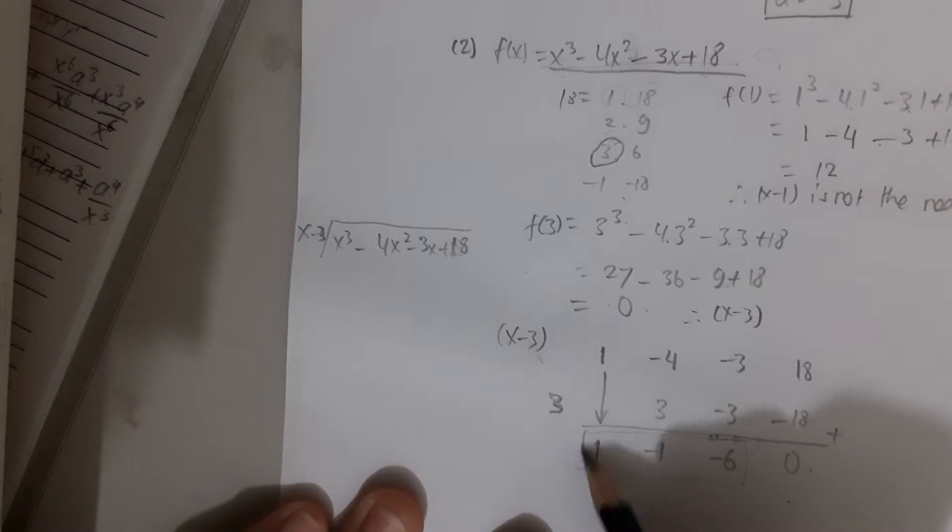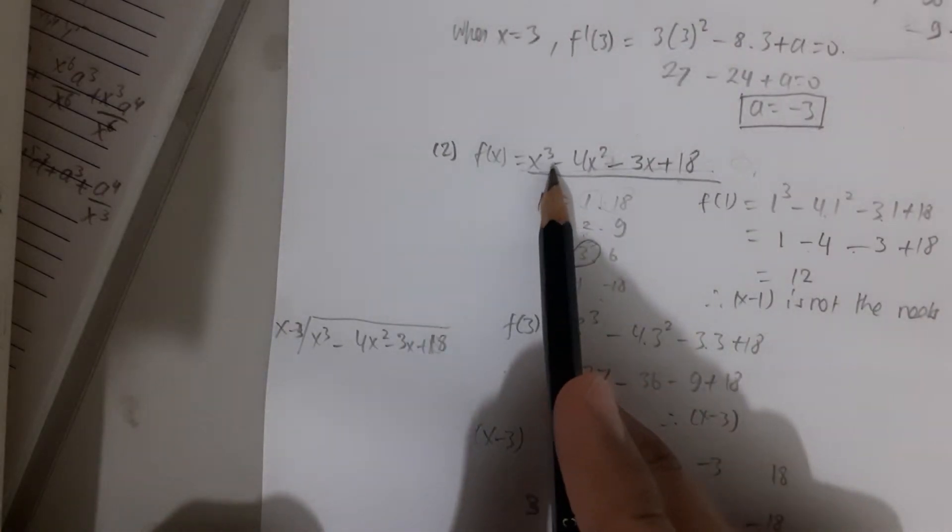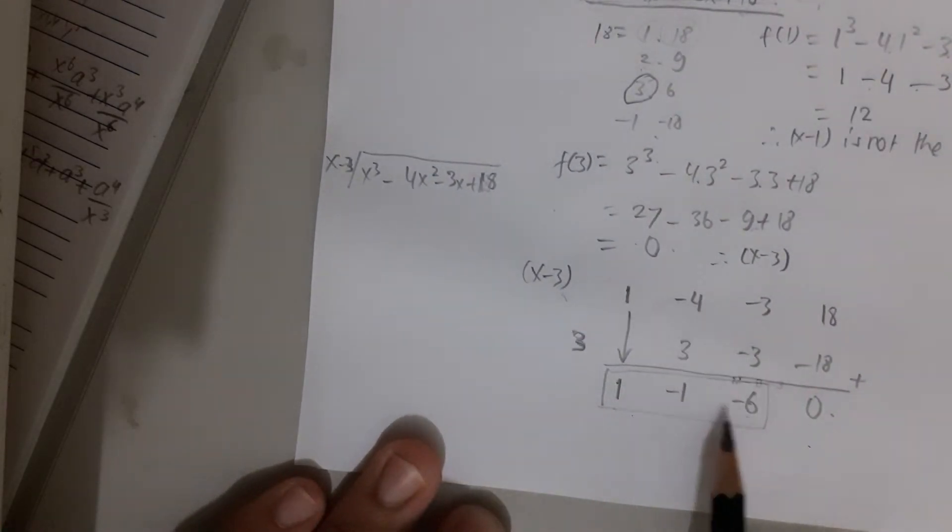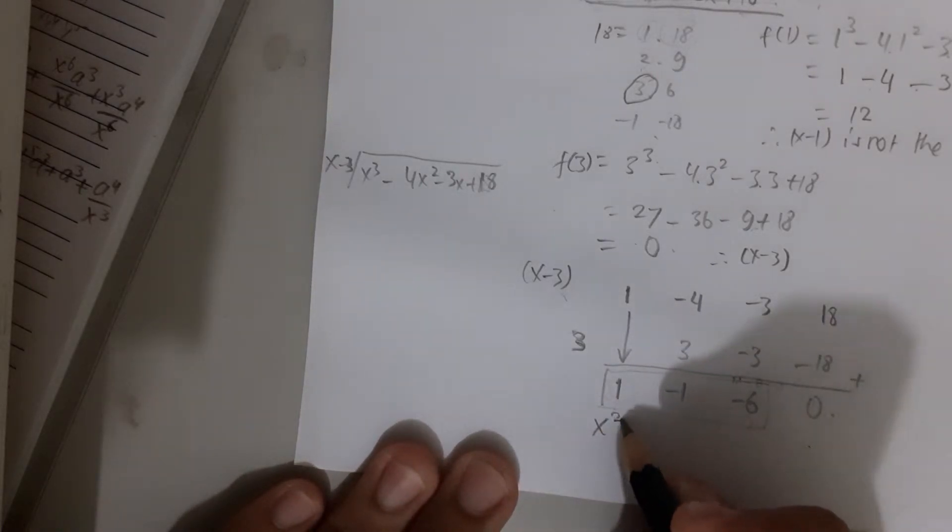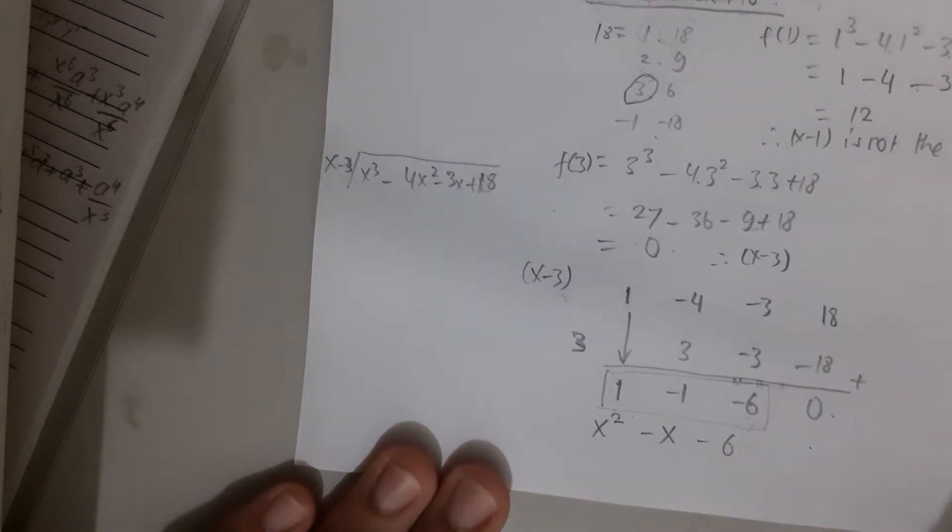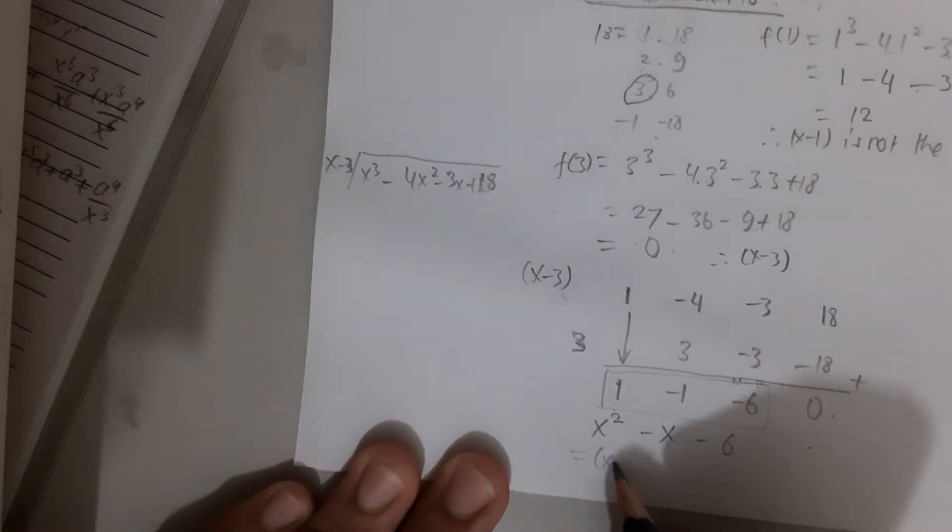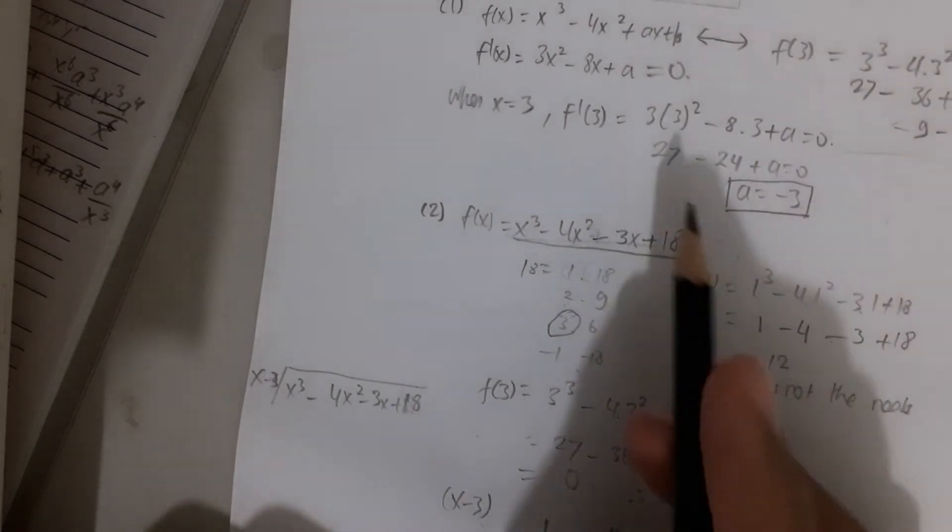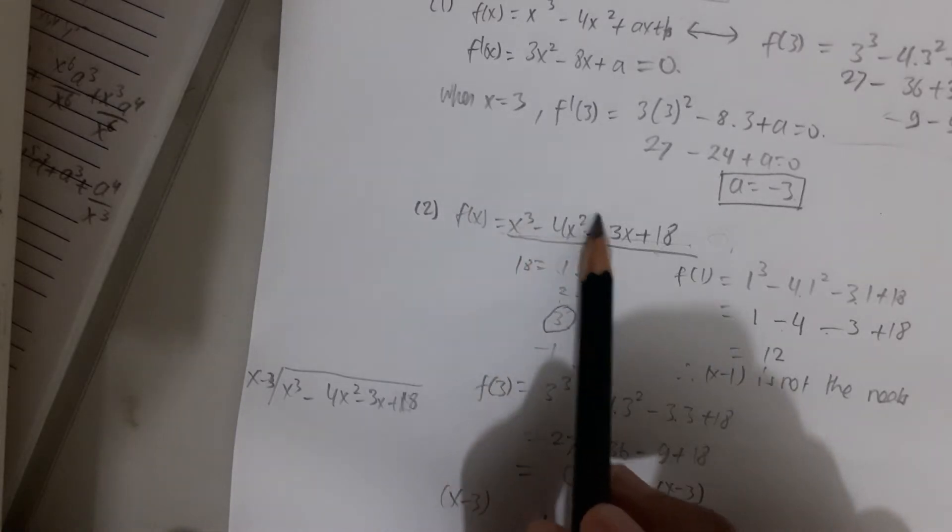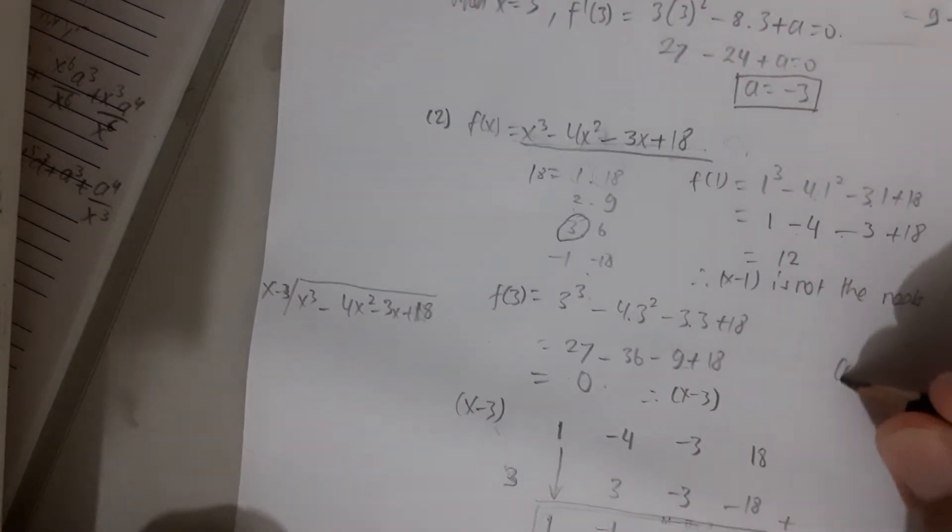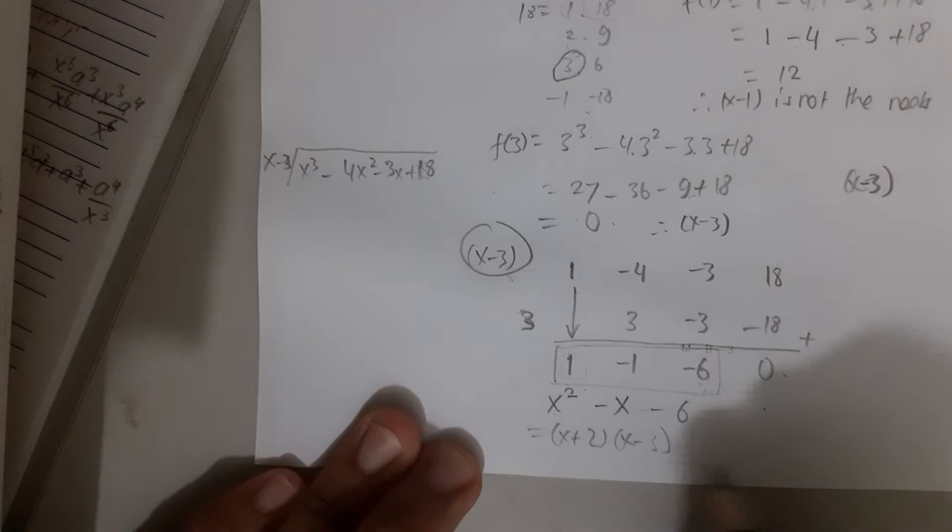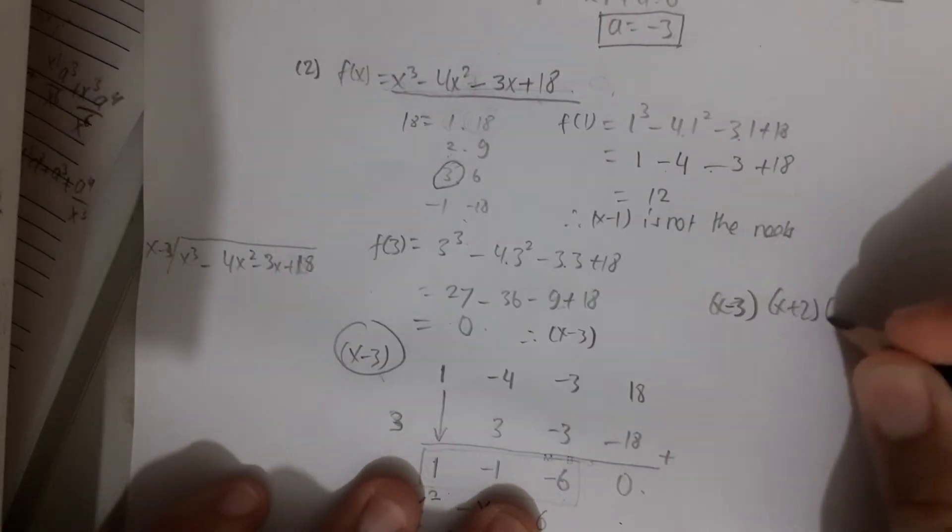Then minus 1 times 3 is minus 3. Minus 3 plus minus 3 is minus 6. And 3 times minus 6 is minus 18. When we add it, it's 0. So what we got is this number. Since our function has order 3, now we are going to set this coefficient to be order 2. So it is x² minus x minus 6. Now we can factorize this to become (x + 2)(x - 3). Therefore the factorization of this function is (x - 3), which is this one, and then (x + 2)(x - 3).